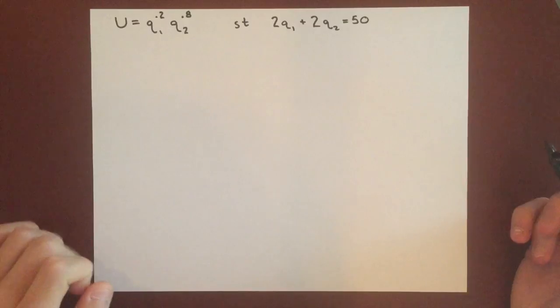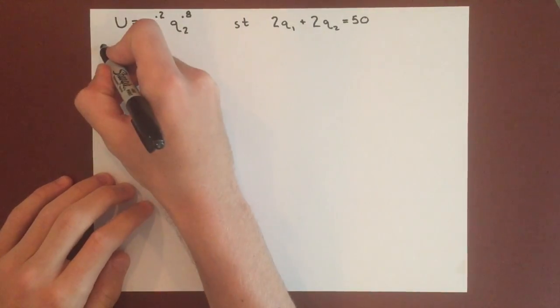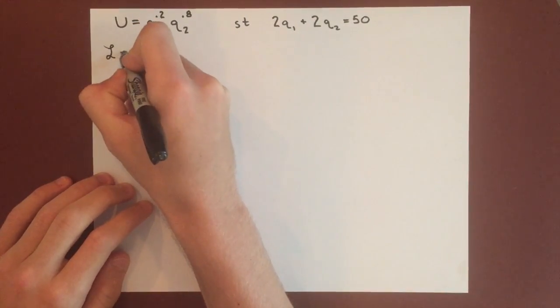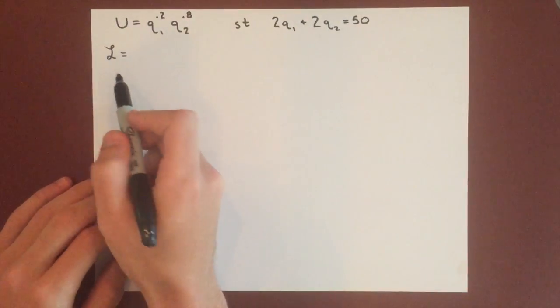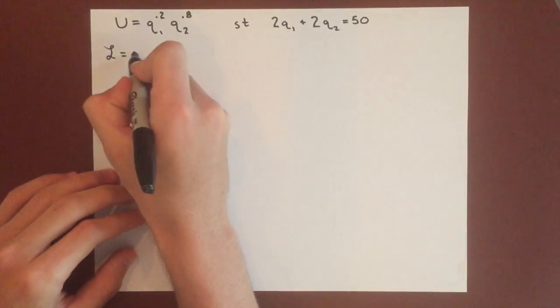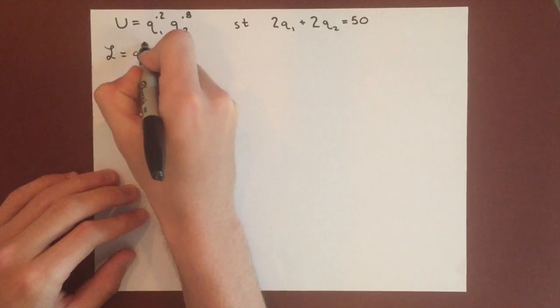Since it's Cobb-Douglas and it's continuous at every point, we can use Lagrange multipliers to optimize it, and we need to write the equation for the Lagrangian first.